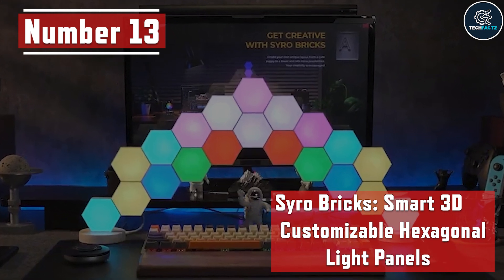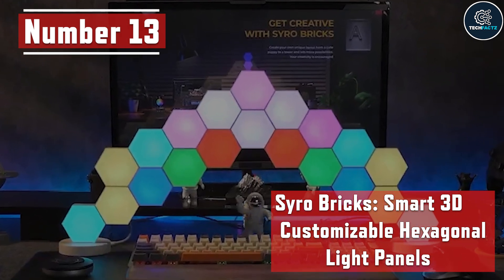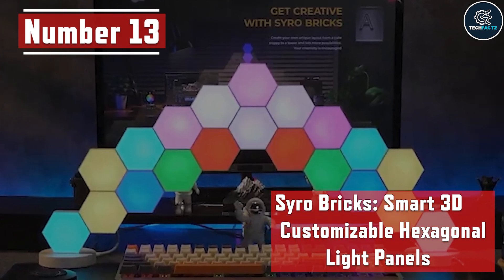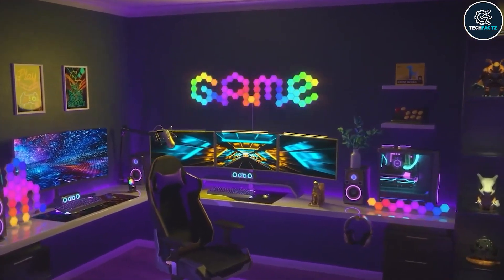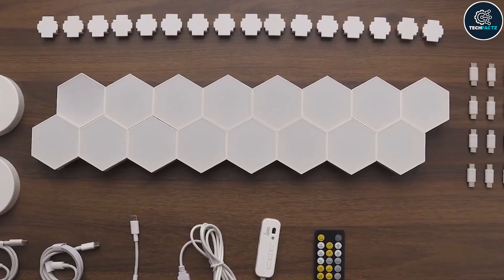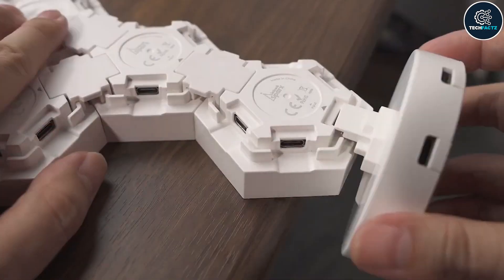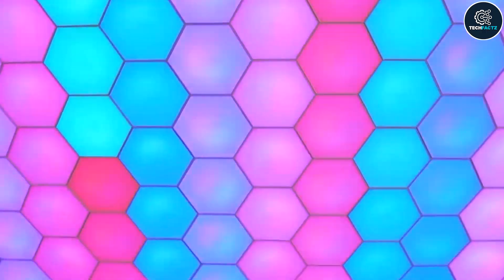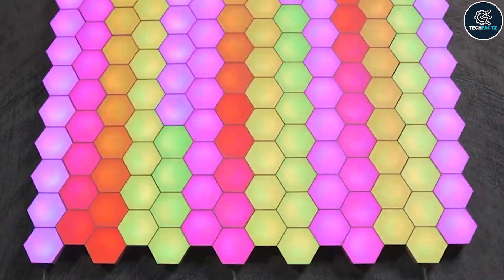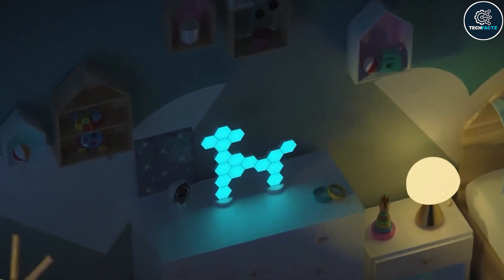Number 13: CRO Bricks Smart 3D Customizable Hexagonal Light Panels. Meet one of the most customizable lamps of all times. This is a set of 16 hexagonal panels you can assemble any way you like. If that's not enough, you can get an additional set, no problem. You can make any kind of pattern with these lamps, like a dog or a dinosaur, depending on your imagination.